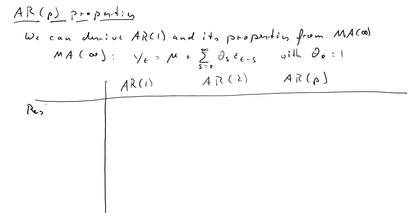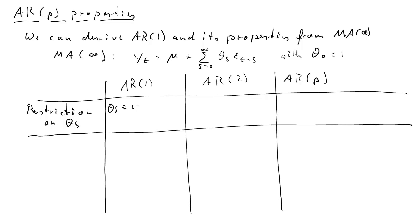And we're going to do this for AR(2) and AR(p). So here's a table, and we start out stating the restrictions required to move from an MA(∞) to starting with an AR(1) process. That was theta_s equals phi_1 times theta_{s-1}. So the theta coefficients of subsequent periods were related to each other, and that delivered the following AR(1) process.